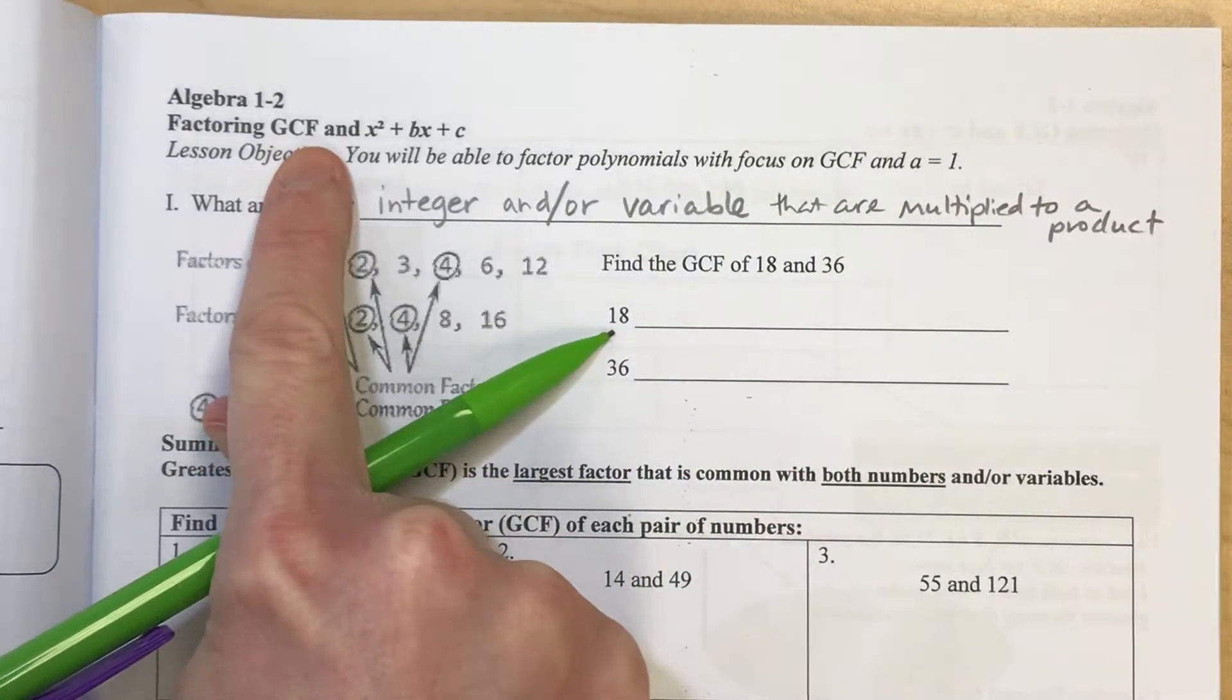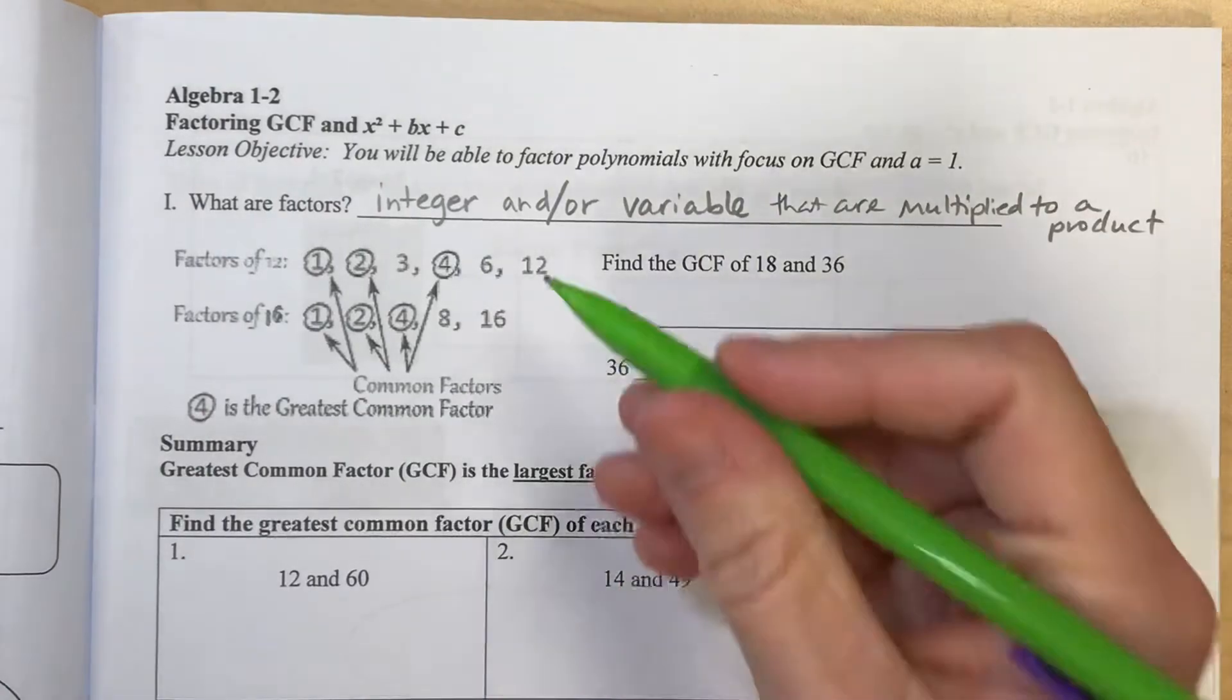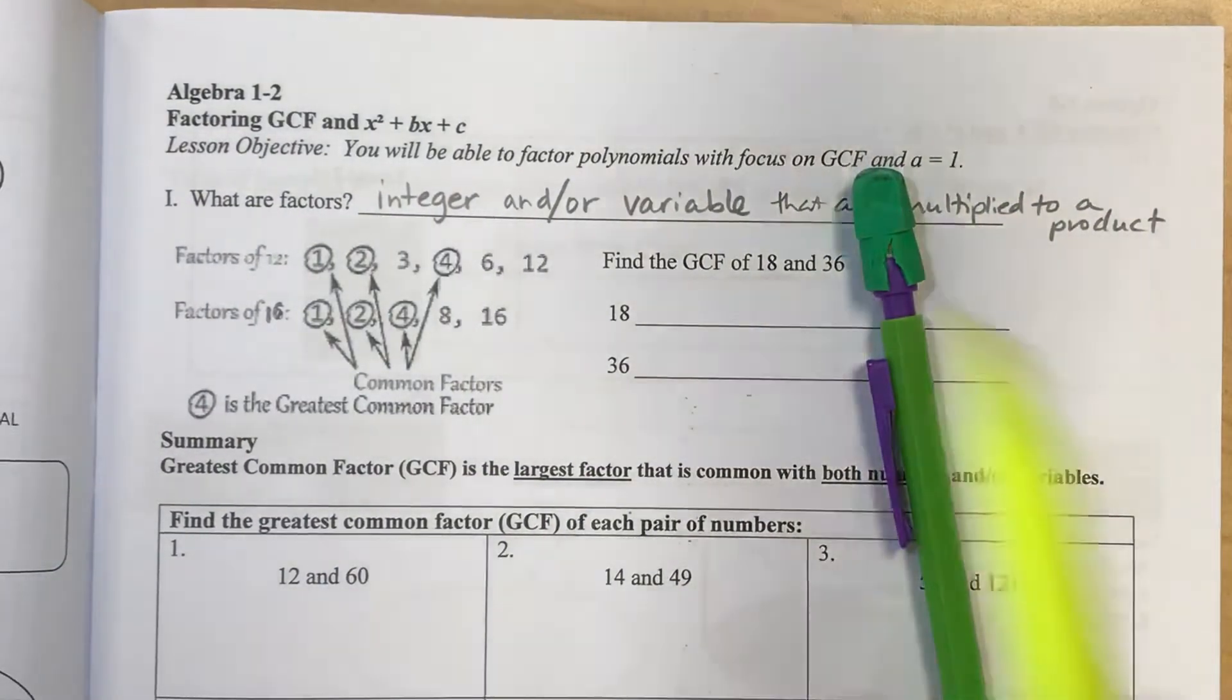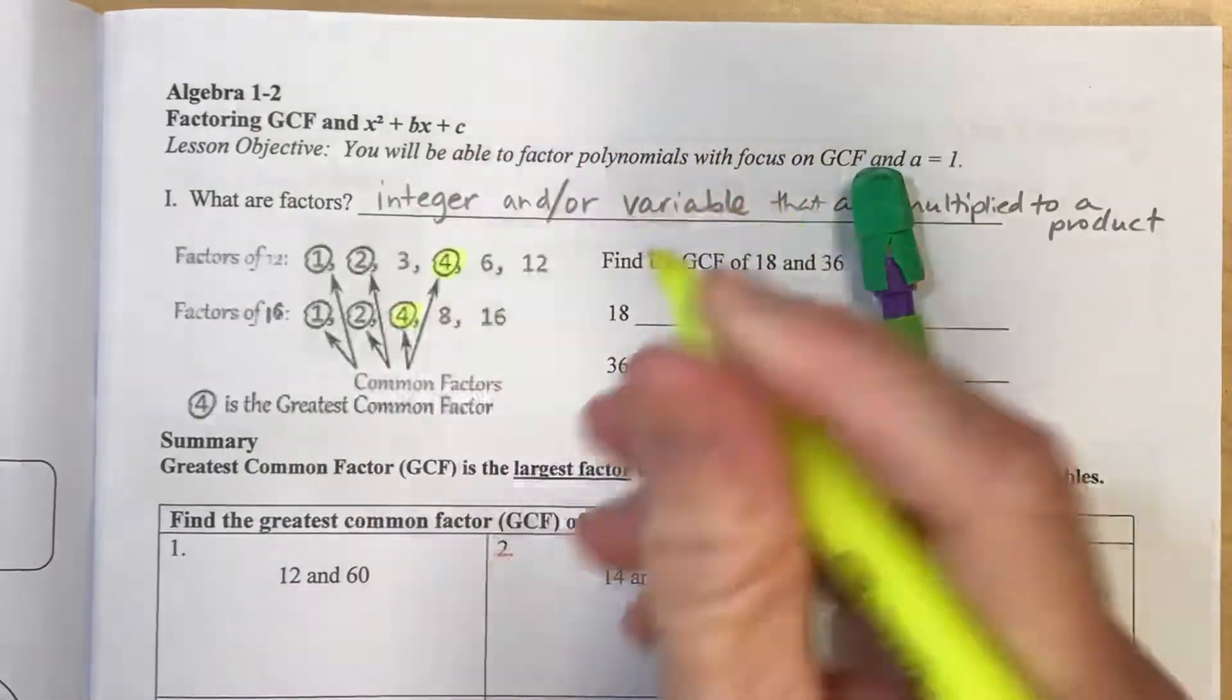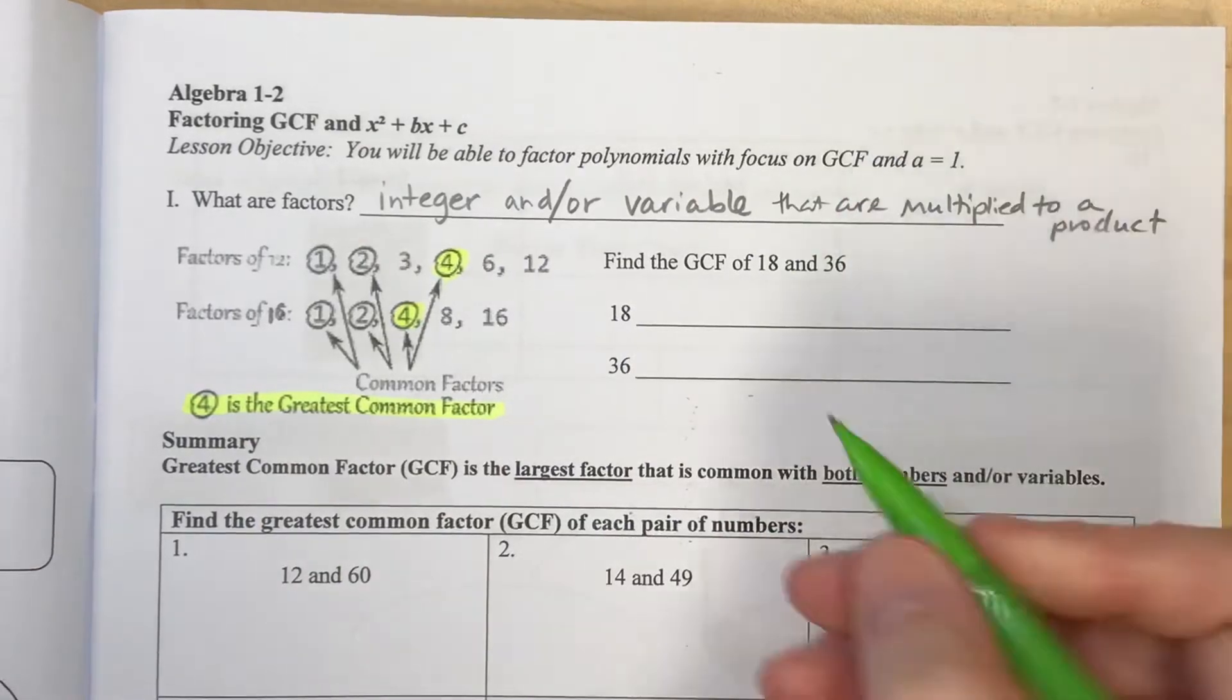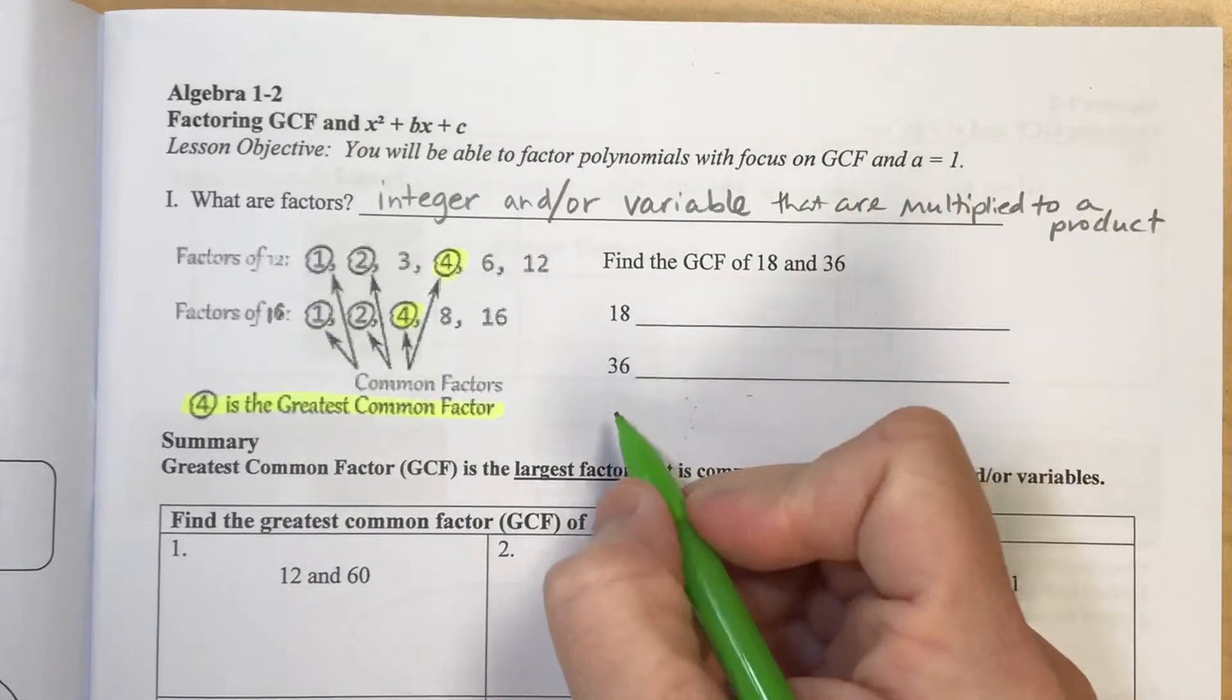And so what we're looking for here with greatest common factor is the factor that both of your factors have in common, and it's the largest one. So the largest factor that both of these have in common would be the number 4. So I'll show you another example here with 18 and 36.